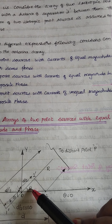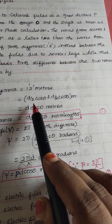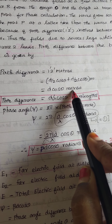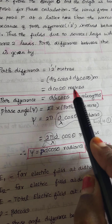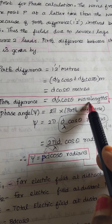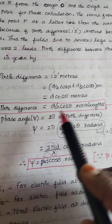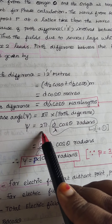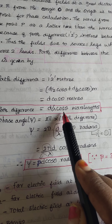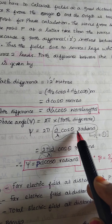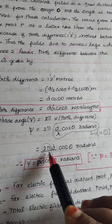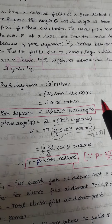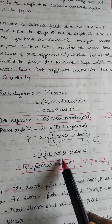The path difference is d by 2 cos theta. The path difference in terms of wavelength is d by lambda cos theta. Then the phase angle psi is equal to 2 pi into the path difference, which gives psi equal to 2 pi d by lambda cos theta, or equivalently psi equals beta d cos theta radians. First step: derive the path difference. Second step: derive the phase angle psi.